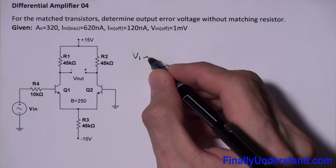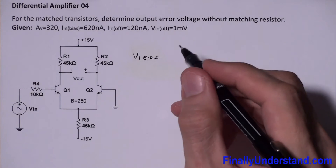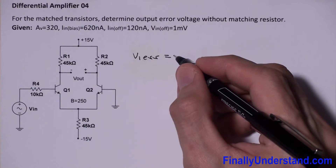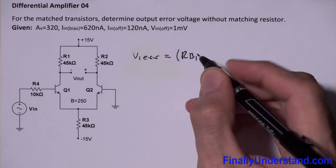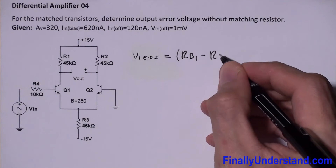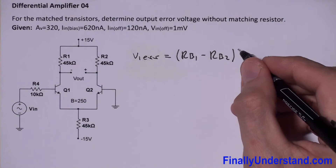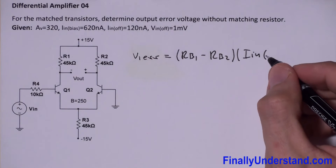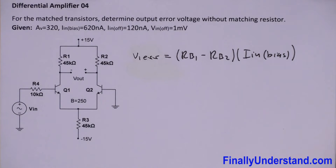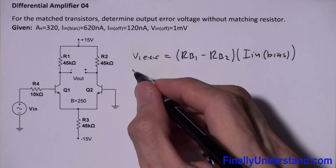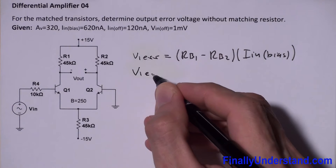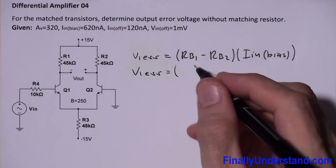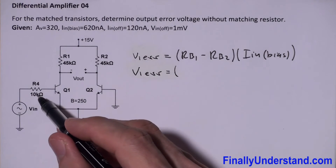The formula is: V1_error = (Rb1 − Rb2) × input bias current. So my input error voltage due to input bias current is calculated as follows: Rb1 — this is my Rb1 — is going to be calculated this way.